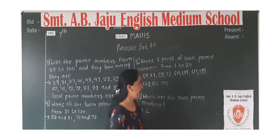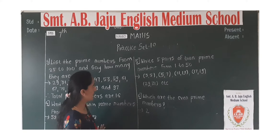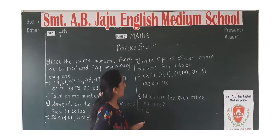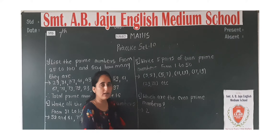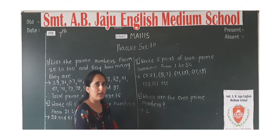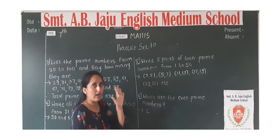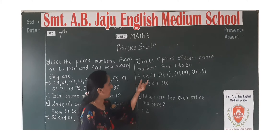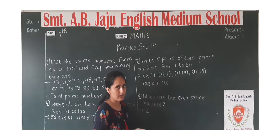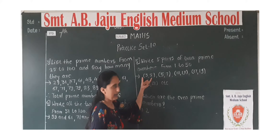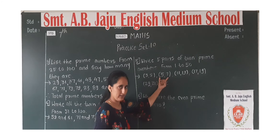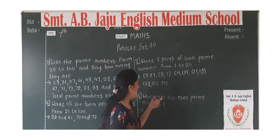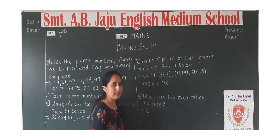Next question: Write five pairs of twin prime numbers from 1 to 50. So from 1 to 50, we have to pick five pairs. First pair: 3 and 5. Second pair: 5 and 7. Third pair: 11 and 13. Fourth pair: 17 and 19. Fifth pair: 29 and 31. These are the five twin prime pairs from 1 to 50.